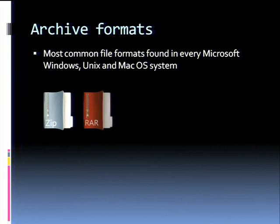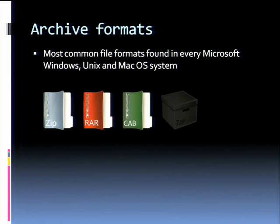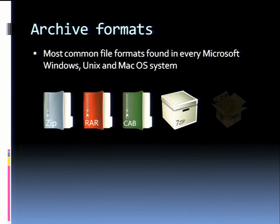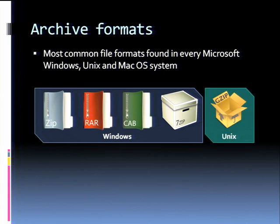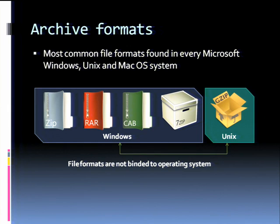If you look at the archive formats, usually you're talking about the most popular ones: zip, RAR, CAB, 7-zip, and GZip. These are the files you will normally find on any operating system, any PC in the world. You will most commonly find the first four on Windows and Unix for GZip. But files are just binaries and they are not bound to the operating system in any form. We selected to split them this way because their archive processors are commonly built for these platforms.